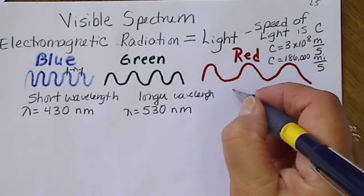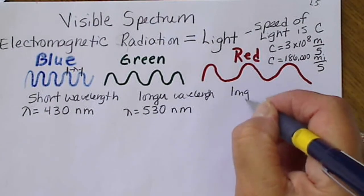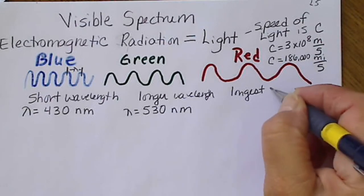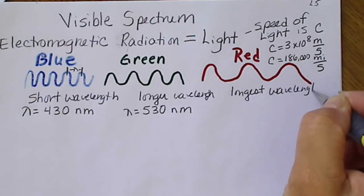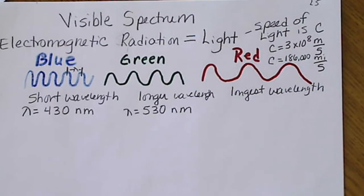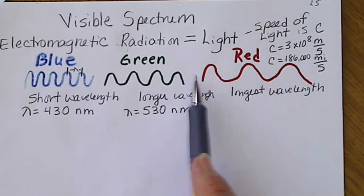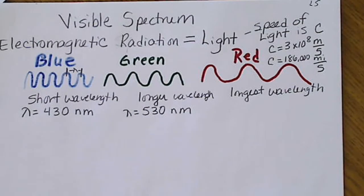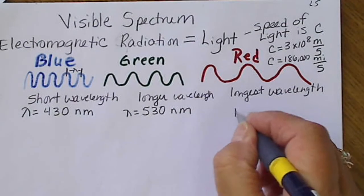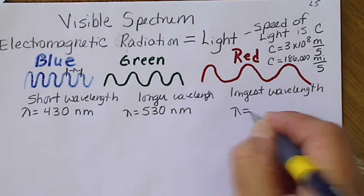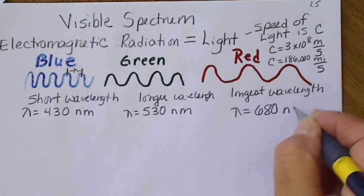Red is the longest wavelength in the visible part of the spectrum. If we look at a rainbow, we'll see the colors in order: ROYGBIV going backwards—red, orange, yellow, green, indigo, and violet. The wavelength of red light is approximately 680 nanometers.